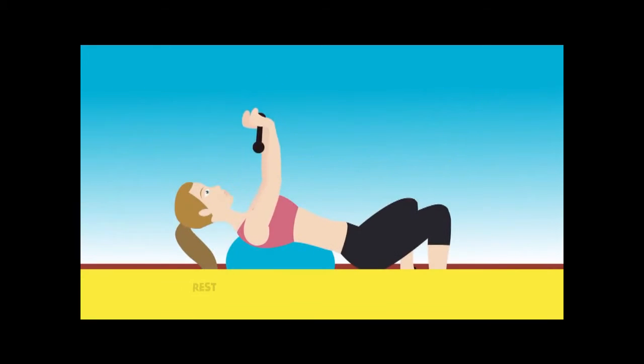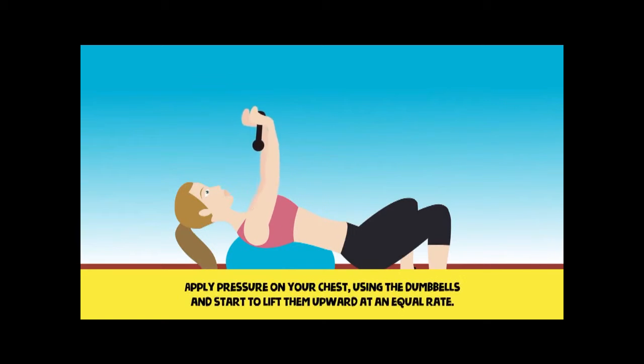Exercise 6. Rest your back on a bench, football or the floor. Apply pressure on your chest using the dumbbells and start to lift them upward at an equal range. Lower the dumbbells by bringing them near your chest and then quickly lift them again. Repeat for eight times. The weight of the dumbbells should be enough to make the last repeat very difficult to perform. Perform three sets of this exercise.